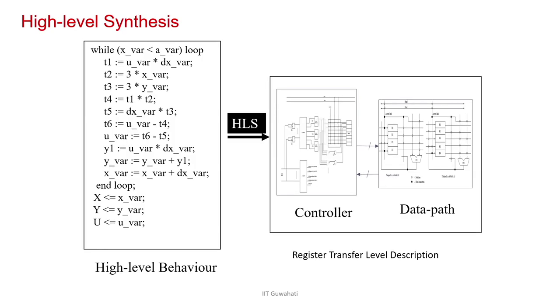Let us start with high level synthesis. High level synthesis takes a C/C++ code and converts it into register transfer level design. In this process, you have a large C code with loops and many operations. You cannot do everything in one clock. So first you decide how many clocks you need to execute that behavior — that is called scheduling. Then you identify how much resource you need: do you need 2 adders or 3 adders, 4 registers or 20 registers? Identifying how much resource you need is called allocation.